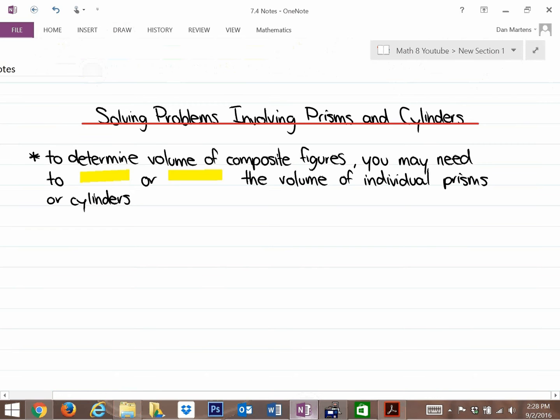Solving problems involving prisms and cylinders. To determine volumes of composite figures, you may need to do the following: you may need to add or subtract the volume of individual prisms or cylinders.